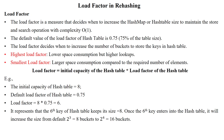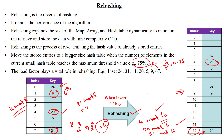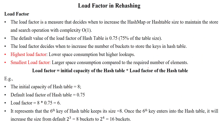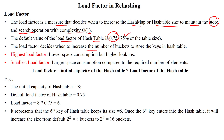This threshold value is called the load factor. We can fix the load factor manually before starting the program. The load factor is a measure that decides when we have to increase the hash map or hash table size to maintain storing and searching elements with time complexity O(1). The default value of the load factor is 75% of table size, that is 0.75. The load factor decides when to increase the number of buckets to store keys in the hash table.